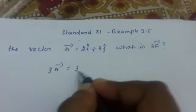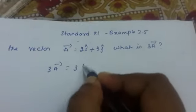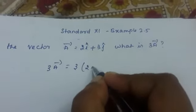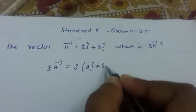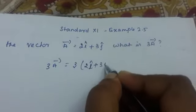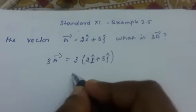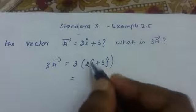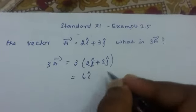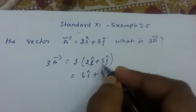That is 3, the scalar, multiplied by the vector a⃗ which is 2i⃗ plus 3j⃗. Now we will go for ordinary multiplication: 3 into 2 is 6i⃗ plus 3 into 3 is 9j⃗.